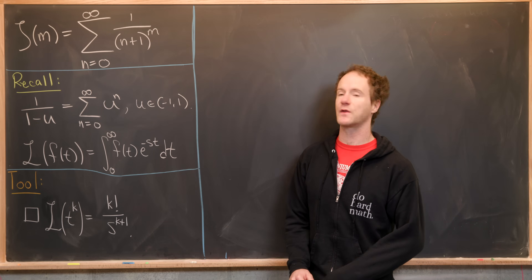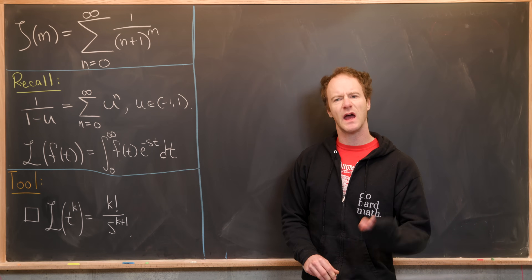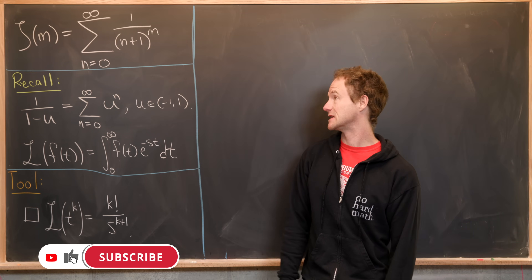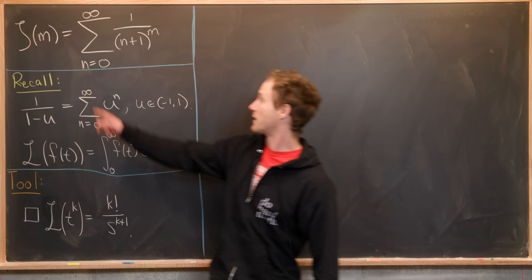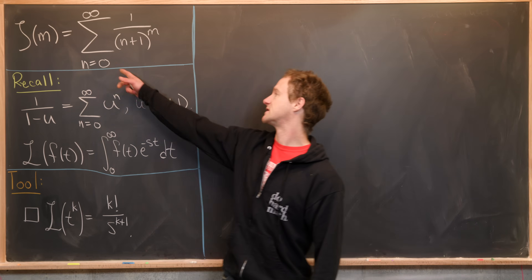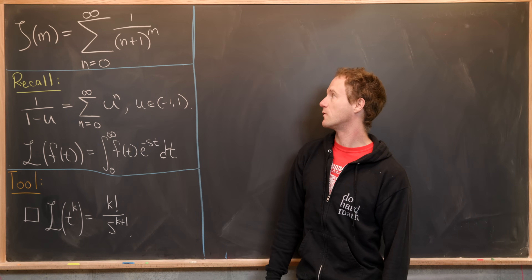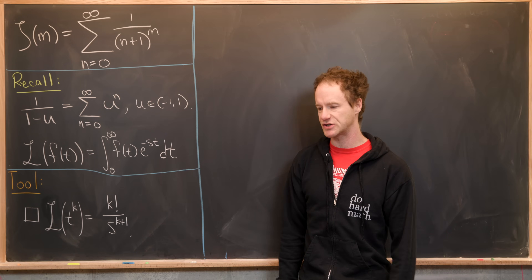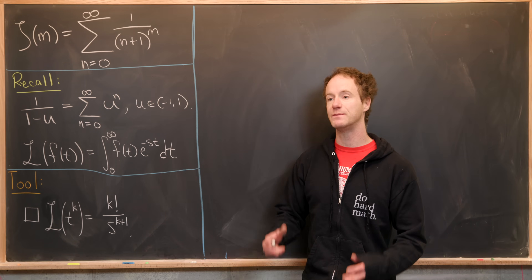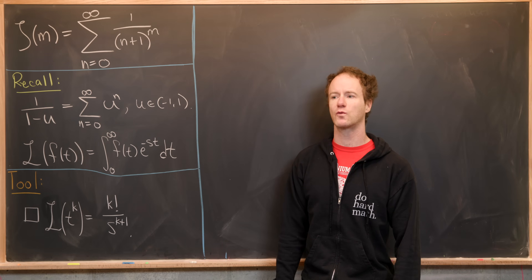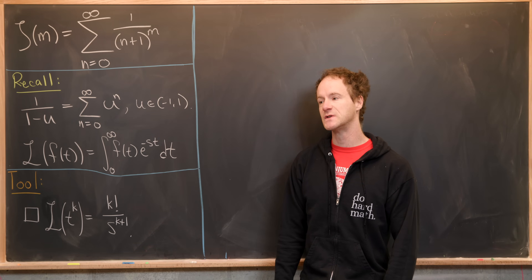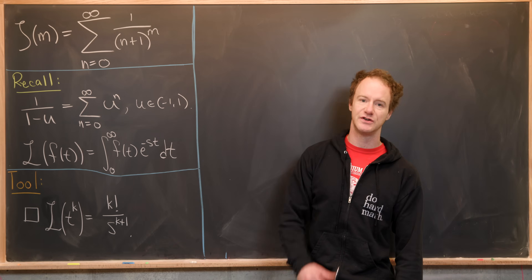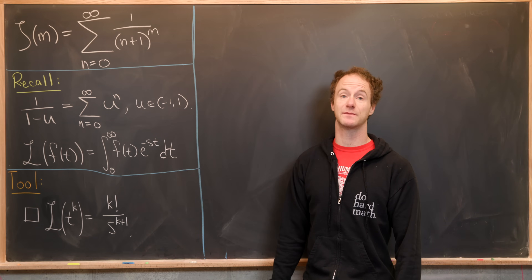Here we're going to derive some integral identities for the Riemann zeta function, looking at it evaluated at positive integers, though this technique can be easily extended. We'll start with a couple of facts and then keep layering substitutions over substitutions until we come up with some surprising identities.